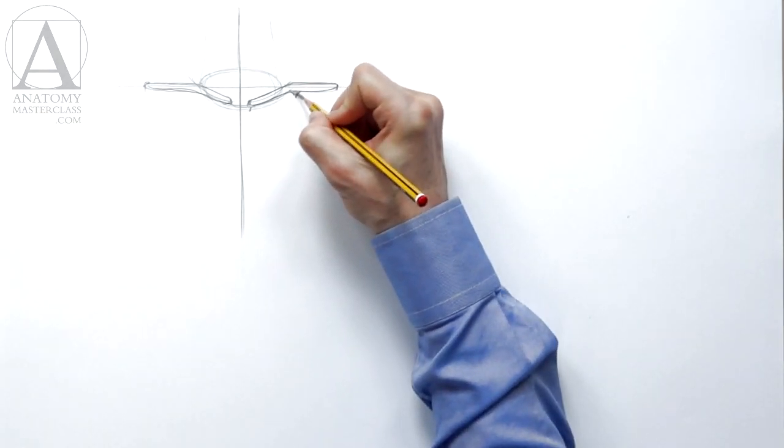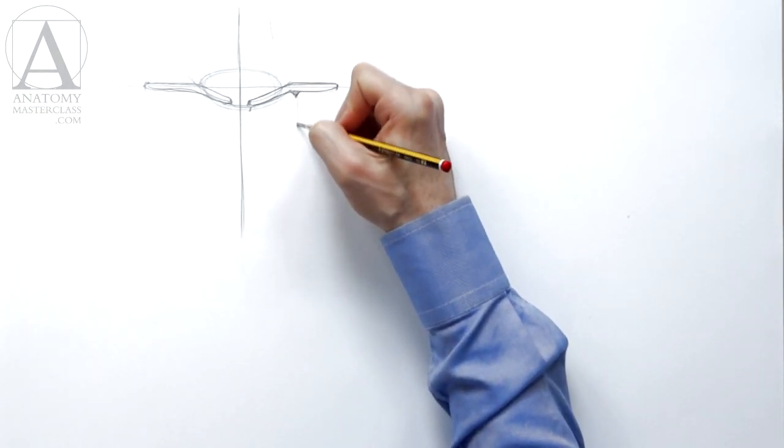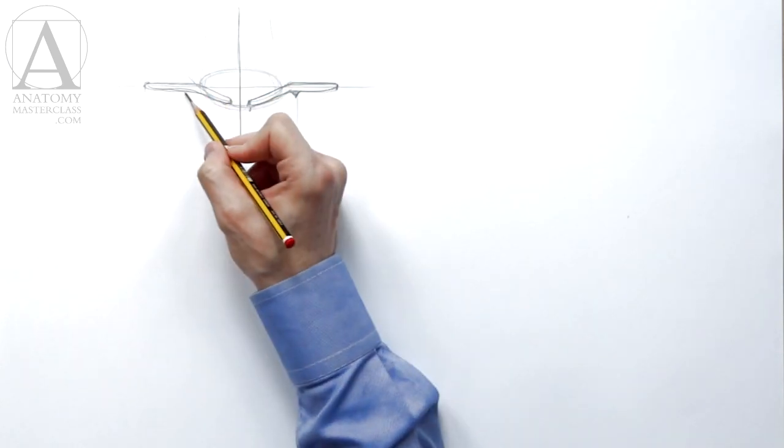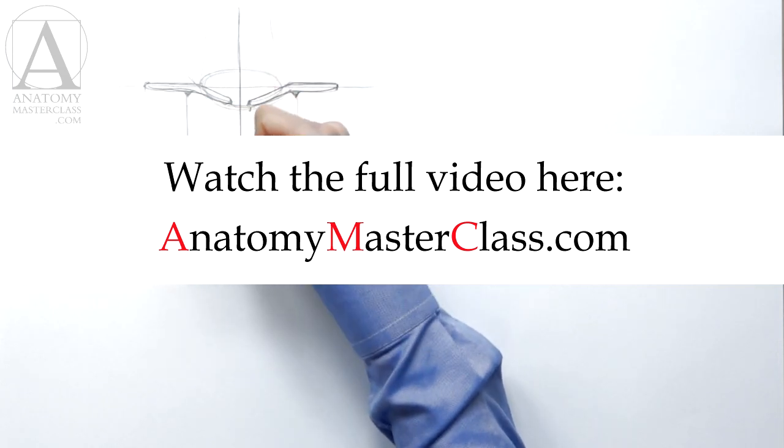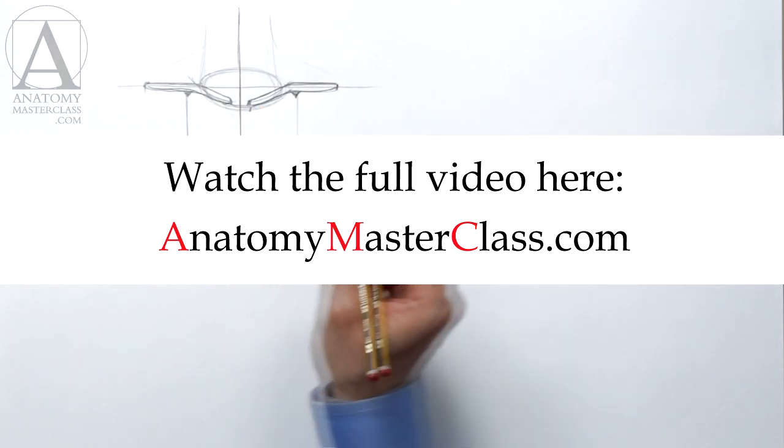In the middle of each collarbone, there is a triangular gap between two muscles that are attached to that bone: the breast muscle and the deltoid. We can draw two vertical lines downward from those landmarks.